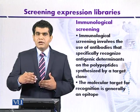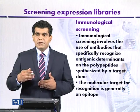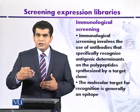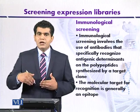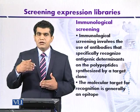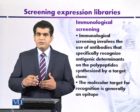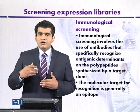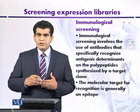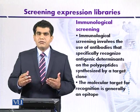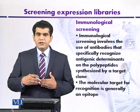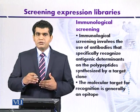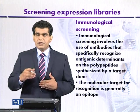Antigenic determinants are produced in different types of proteins under different conditions. For example, if a protein is expressed incompletely, epitopes are still formed on such incomplete proteins. Even if proteins are expressed in a hybrid or chimeric form — called fusion proteins — fusion proteins are the product of two genes, and they also have epitopes or antigenic determinants.